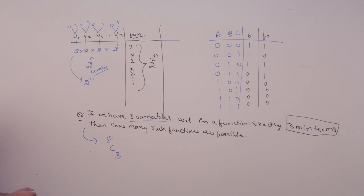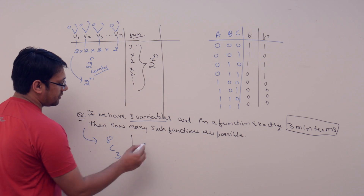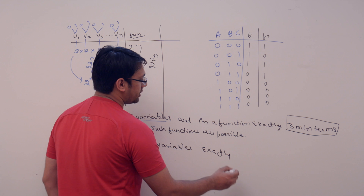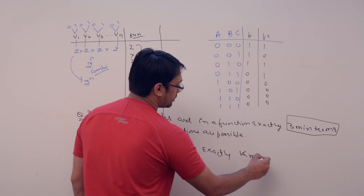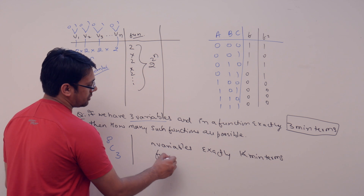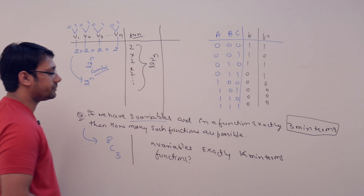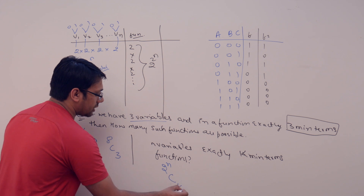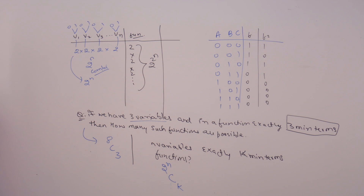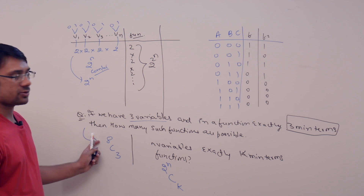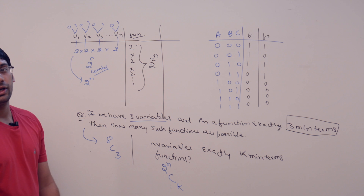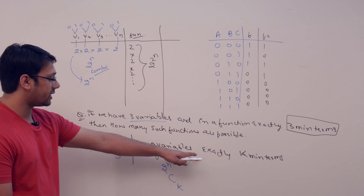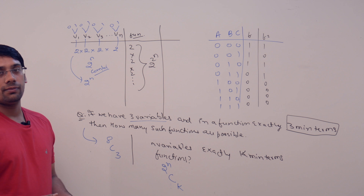If we write this in terms of n variables: if we have n variables and there are exactly k minterms, then how many such functions are possible? The answer is C(2 raised to power n, k) — that is, 2 raised to power n C k. For three variables we have 2^3 = 8 combinations, and we choose exactly k of them to be one, so the answer is 2^n C k.